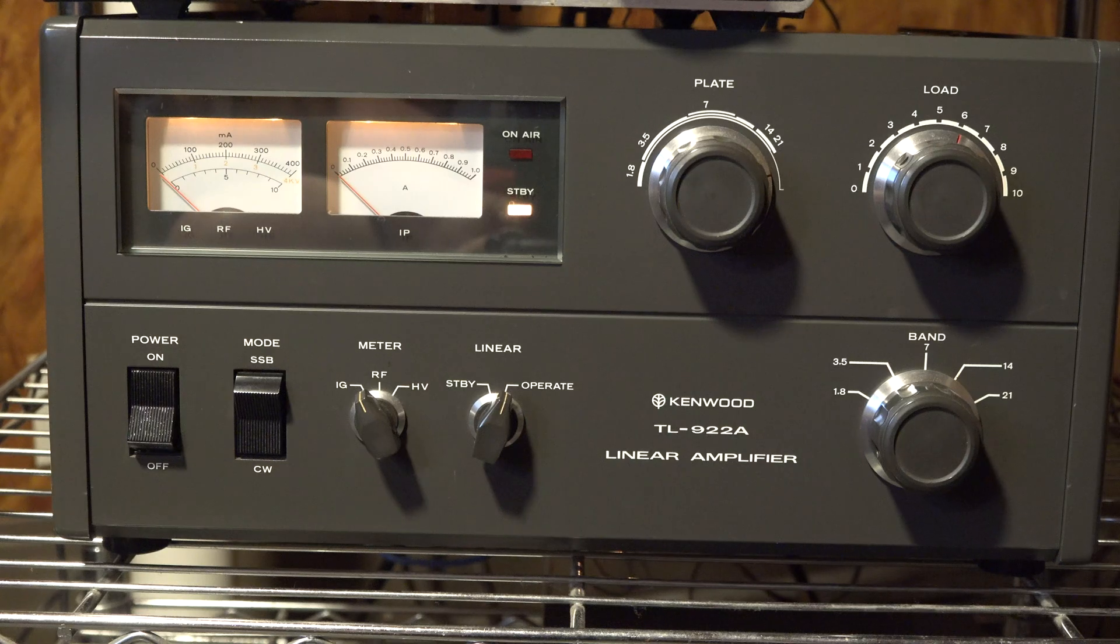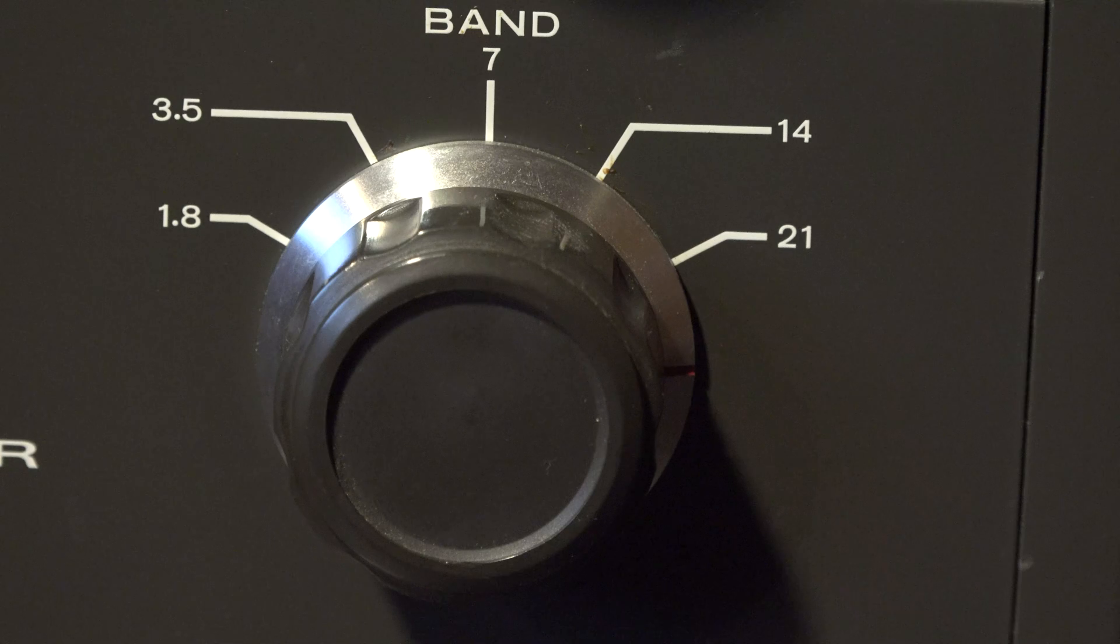So here it is all back together. And, oh yeah, another thing is the band selector switch on my amplifier already had this stop screw taken out. So I could already dial it to the 10 meter position, like this would be here. Of course, there's nothing marked on the amp because that's just how they come. But this is the 10 meter position now.